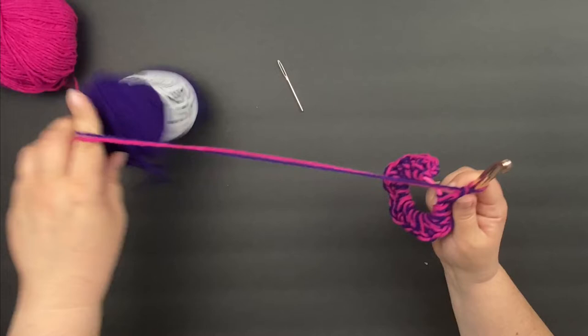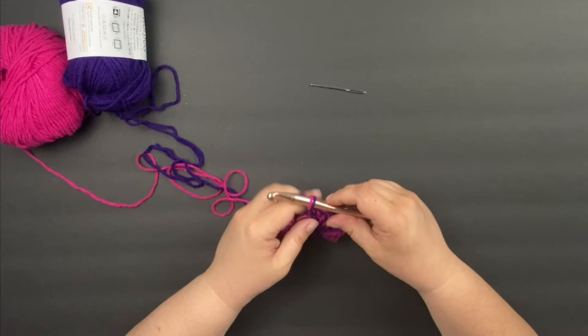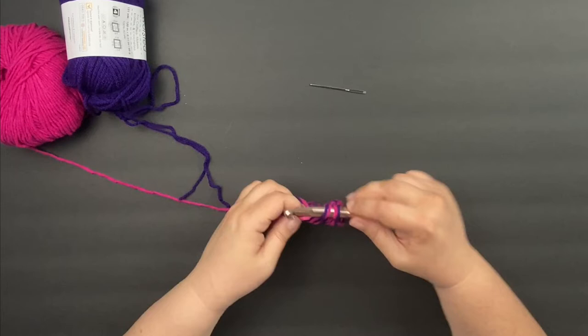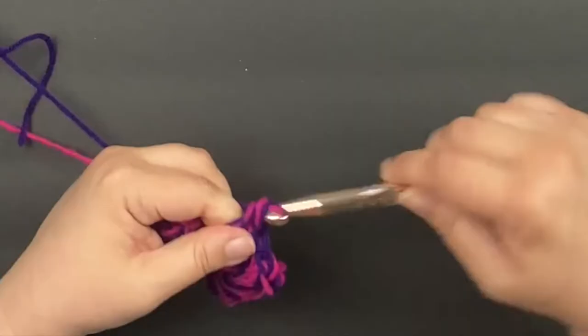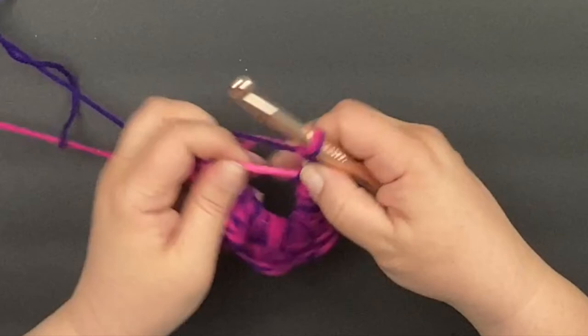I'm just going to take a little pause here to show you what I meant by needing to scrunch it up. So you can see here I've pretty much gone all the way around my hair tie, but it's flat. So I am just going to pull it down here and give myself some more room to work.